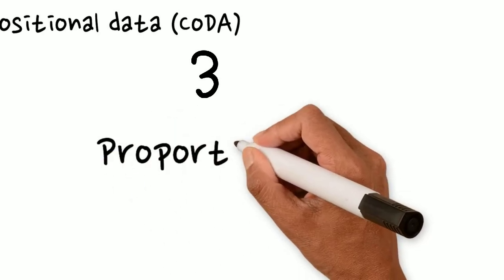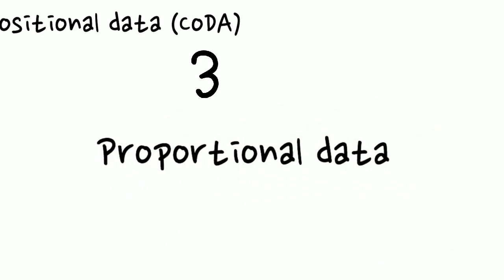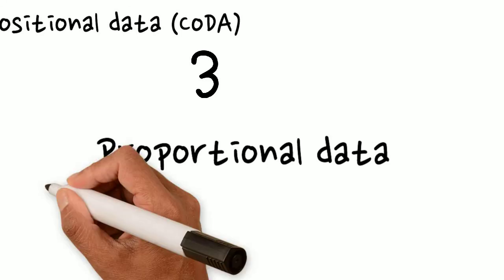Compositional data, CODA for short, is data that is proportional. Ratios are informative, and not the absolute value.